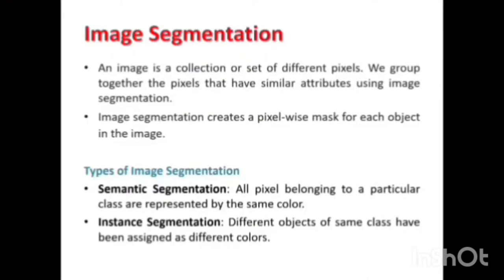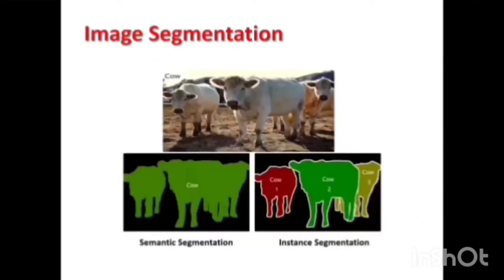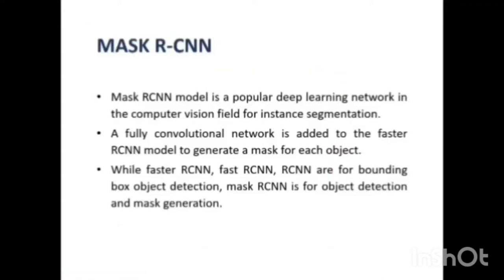Image segmentation is a division of objects in an image into regions, creating a pixel-wise mask for each object. There are two types of image segmentation: semantic segmentation and instance segmentation. Semantic segmentation is where objects of the same class are represented by the same color. Instance segmentation assigns different instances to different objects of the same class. The Mask RCNN model uses instance segmentation and the U-Net model uses semantic segmentation.